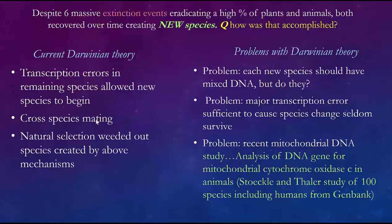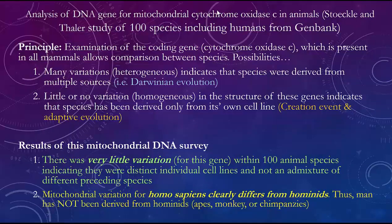Another option is that species mixed and produced a hybrid, and then natural selection weeded out the weak. Here are the problems with Darwinian theory: each new species should have mixed DNA — but does it? Recent investigations suggest that's not true. Major transcription errors seldom allow species to survive — most times they are anomalous and die. The last problem is mitochondrial DNA. A study looked at a commonly used enzyme in DNA replication across a hundred different species from the gene bank — a storage of all known previous life forms.